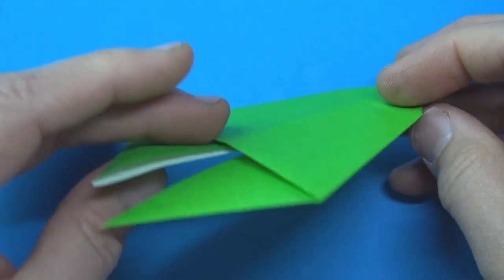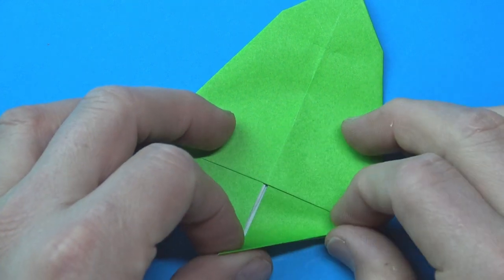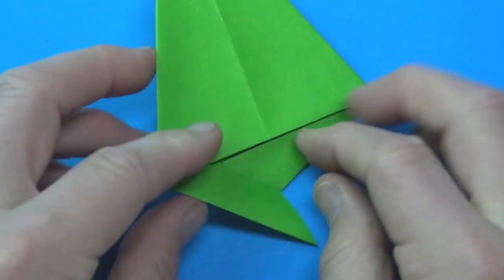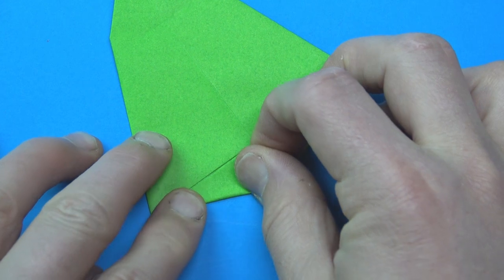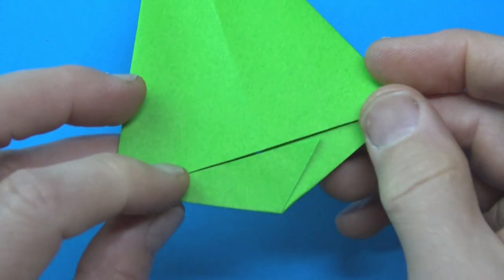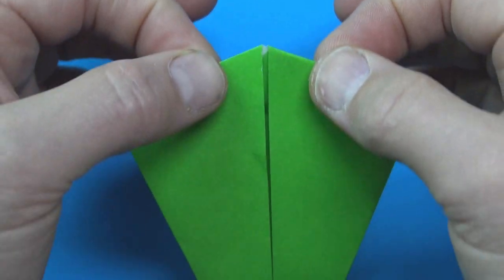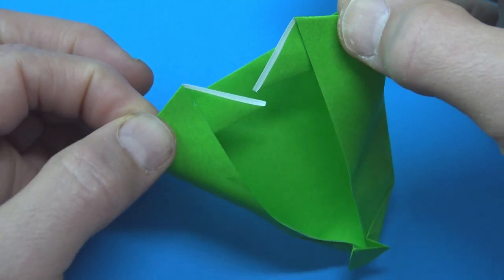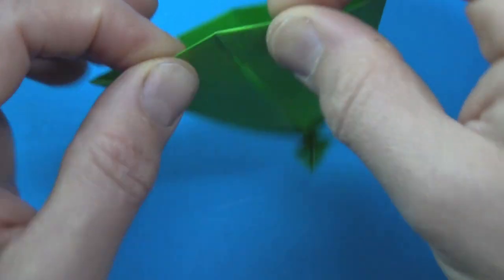And turn over. Fold this edge to this edge. And repeat. Turn over. And hold here and here. And pull apart. And slide one flap into the other. Turn over.